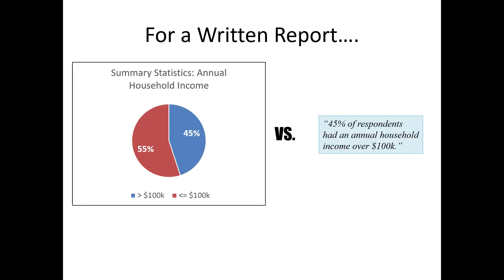For a written report — emphasis on written report, not a visual presentation — which approach is superior when reporting sample composition? Using a quarter or half a page for a simple pie chart that says 55% of people had less than $100,000, or simply writing that 45% of respondents had an annual household income over $100K? That took 10 words — about a line in a report. And if you use a giant pie chart taking up space, you still have to write the summary up. Charts alone are never sufficient; you have to describe them as well. This doesn't make sense because it's not central to our analysis and it's utilizing too much space.